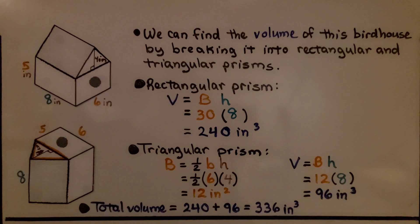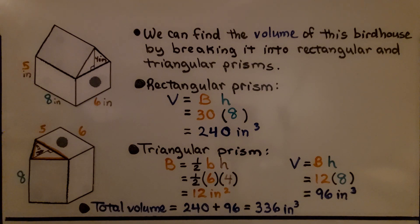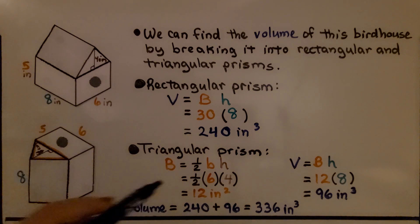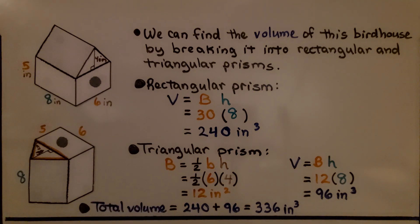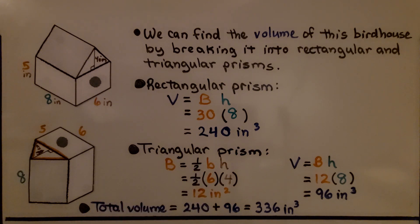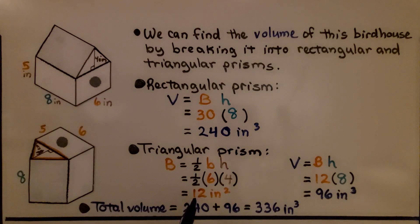We can find the volume of this birdhouse by breaking it into rectangular and triangular prisms. For the rectangular prism, volume equals base area times height. The base area is six times five, which is thirty, and we have a height of eight. That's two hundred forty inches cubed. For the triangular prism, the base area equals half base times height — that's half of six times four inches, giving twelve inches squared.